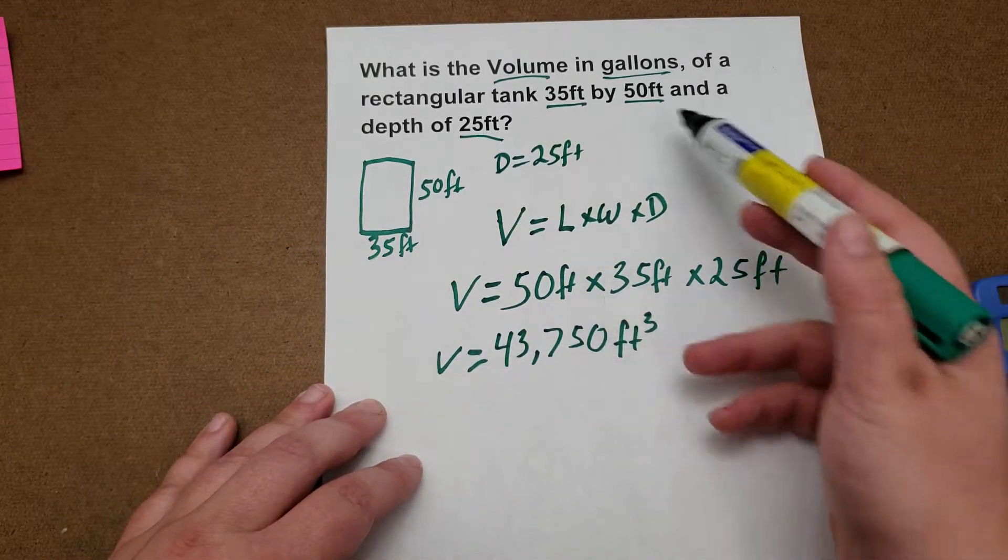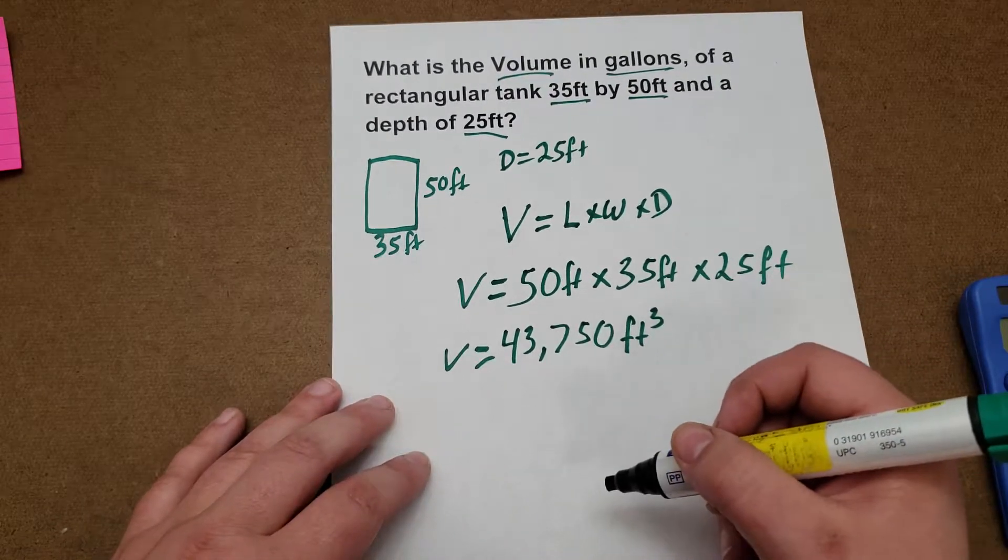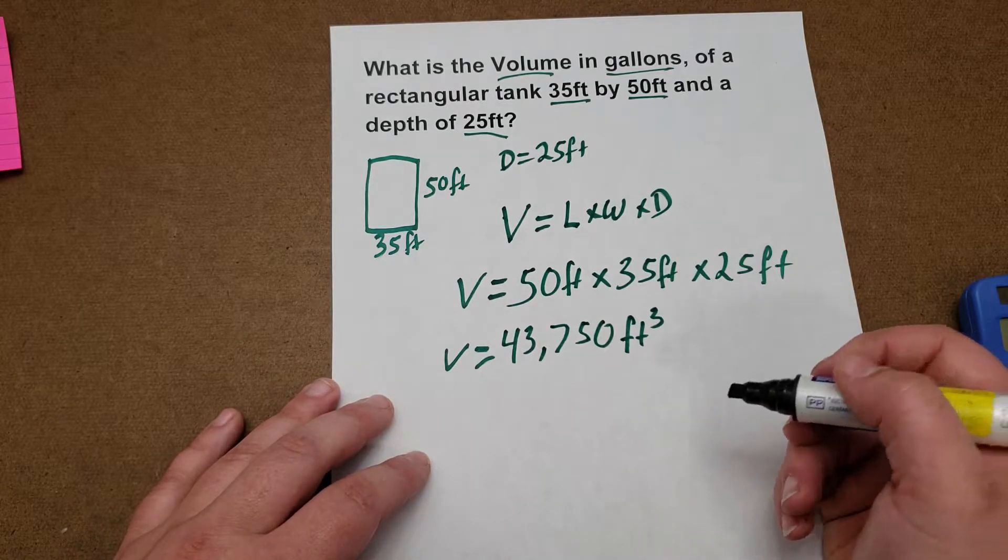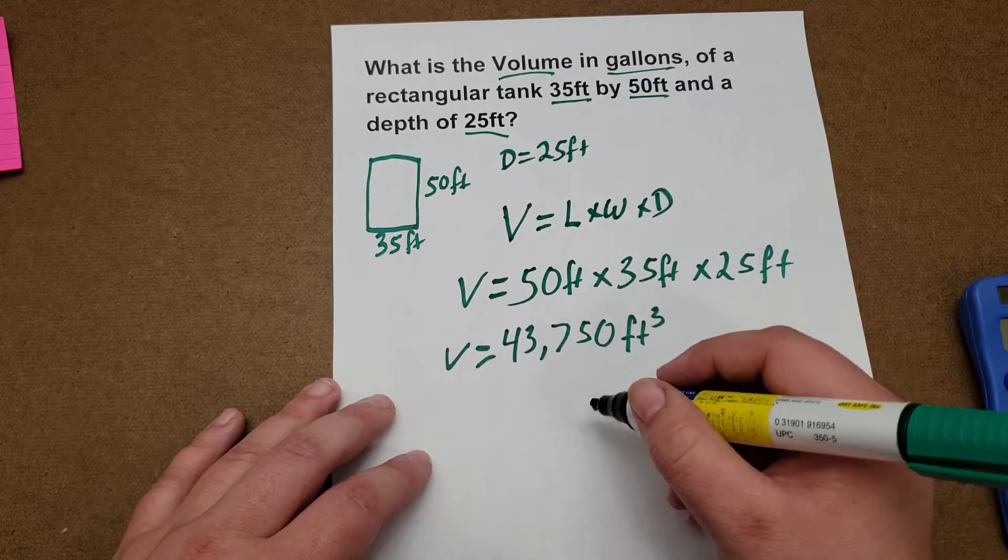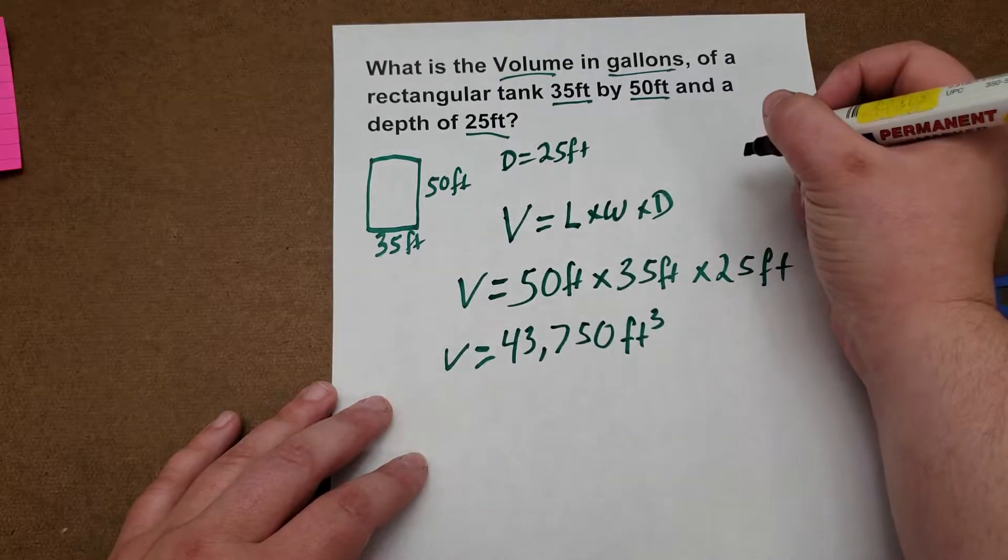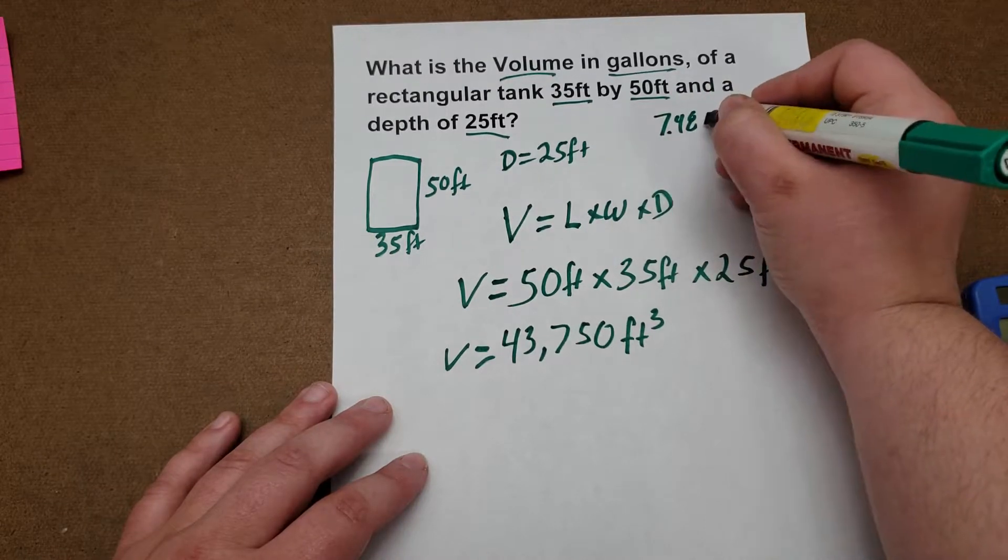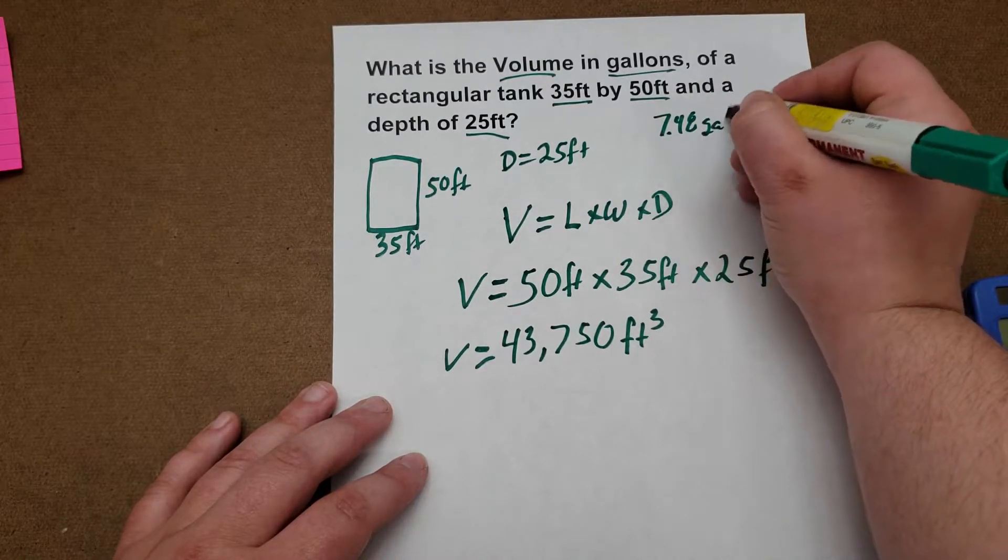But because they want it in gallons, we have to do one more step. So what we do is we take the conversion factor from feet into gallons, which is 7.48 gallons per foot cubed.